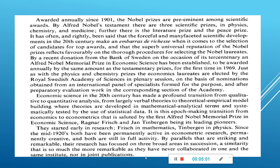With that background, let's turn to the Nobel Prize in 1969. It was a path-breaking Nobel Prize — the first Nobel Prize for economics — given for econometrics to two scientists: the Norwegian Ragnar Frisch and the Dutch scientist Jan Tinbergen. Awarded annually since 1901, the Nobel Prizes are preeminent among scientific awards. The forceful scientific developments of the 20th century make the selection of candidates for top awards very competitive, and the Nobel Prize's universal reputation reflects the thorough procedures for selecting laureates.